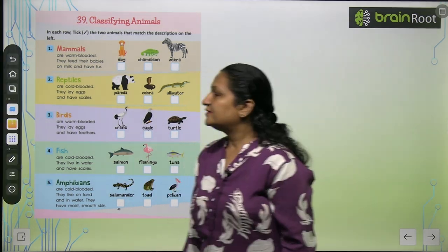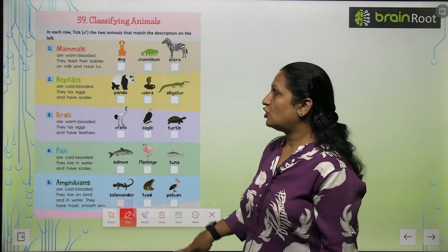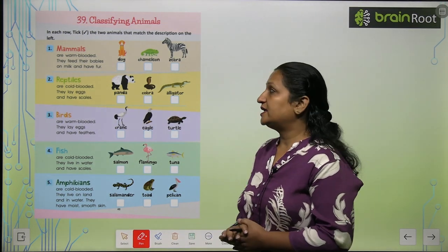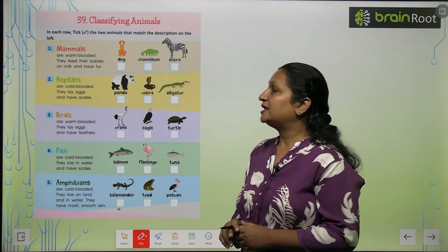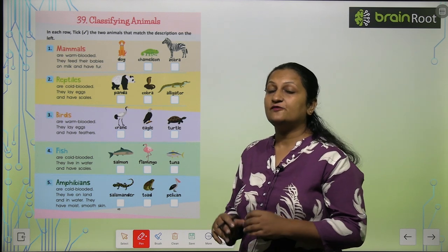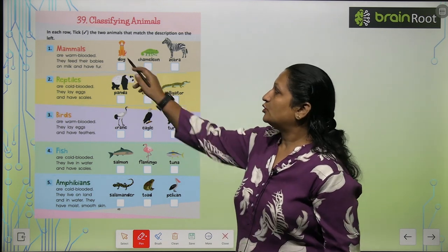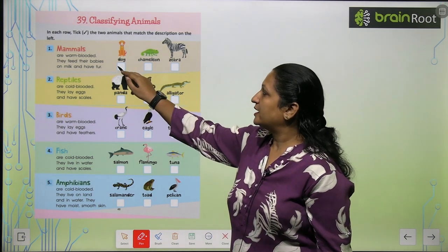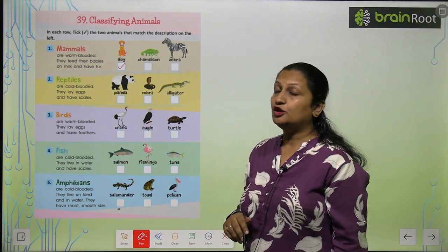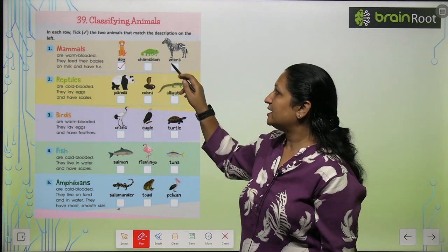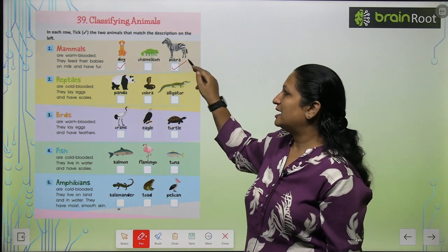We will tick out. The first one says mammals. So mammals kaun hote hai? Mammals wo hote hai jo warm blooded hote hai, jo apne babies ko feed karte hai with milk, aur jinki body per hote hai fur. So aapko pata hai dog hai — dog is a mammal. Is chameleon a mammal? No, chameleon mammal nahi hai. But zebra is a mammal.